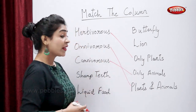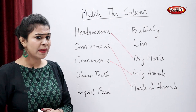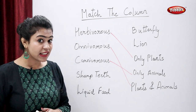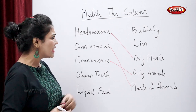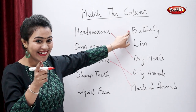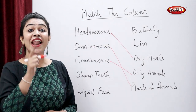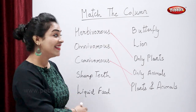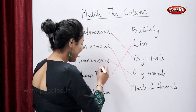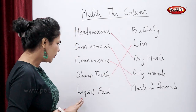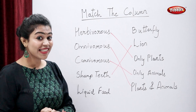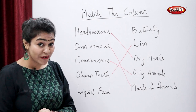Now tell me, which animal has sharp teeth? Is it butterfly? No, right — it's lion. And liquid food? That's butterfly.